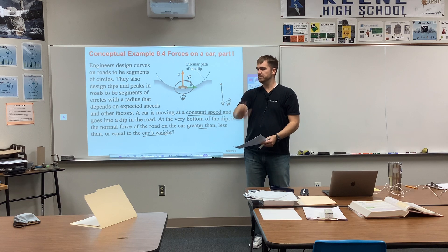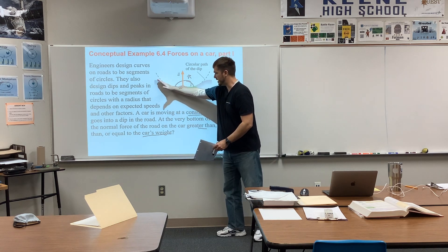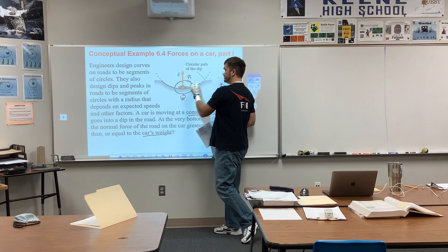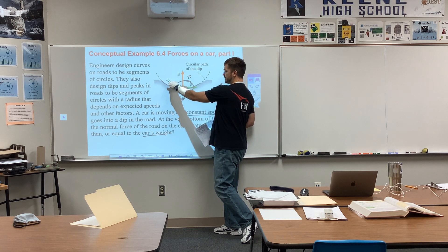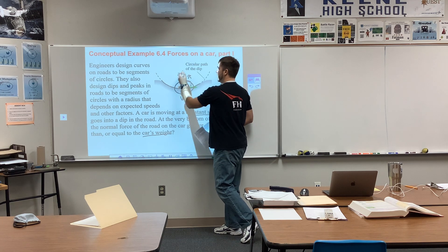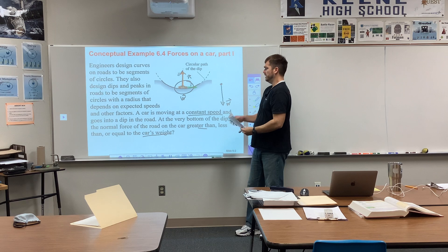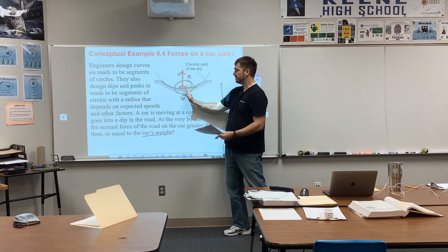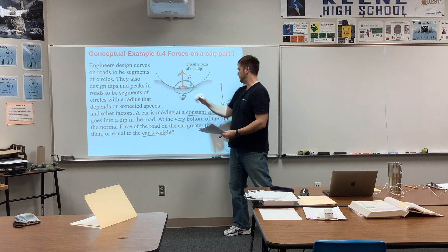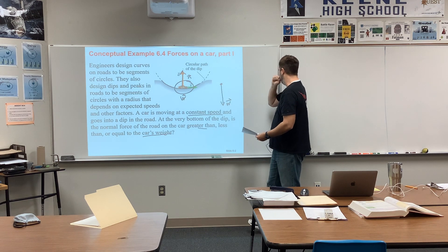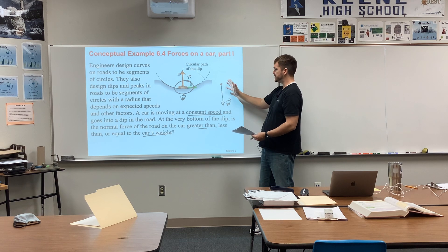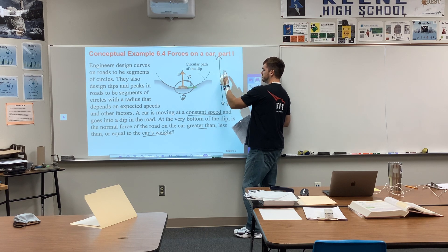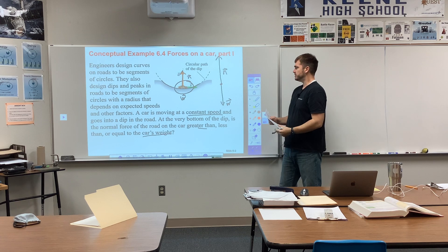Since the object is traveling in a circle, we know that even if it's not speeding up, the direction of velocity is changing, so there is acceleration. That acceleration points towards the center of the circle. The direction of acceleration is also the direction of net force, so there must be a net force pointing upward. Since I only have two forces and the net force is up, the normal force must be greater in magnitude than the weight force.